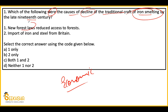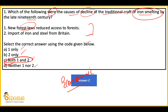The new forest laws reduced access to forests for those who practised traditional crafts. Second, import of iron and steel from Britain began, due to which traditional iron smelting declined. The options are: one only, two only, both one and two, neither one and two. If you understand the concept and have studied history properly rather than just memorizing, you can answer. The answer in this case is option C — both one and two.